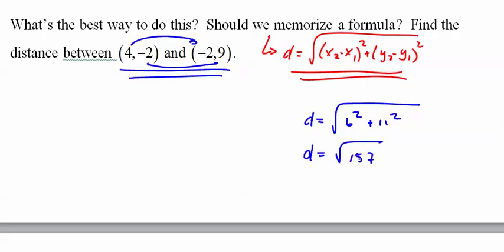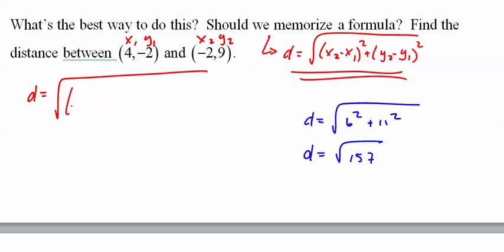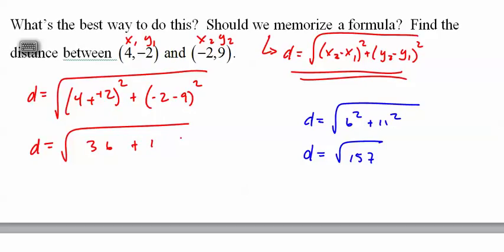Of 157. If you're going to do it with formulas, at least be smart enough to label the points. x1, y1, x2, y2. 4 minus negative 2 squared, plus 2 minus 9 squared, which I just showed is 36 plus 11 squared, which is 121. Gives you this, which does not reduce.